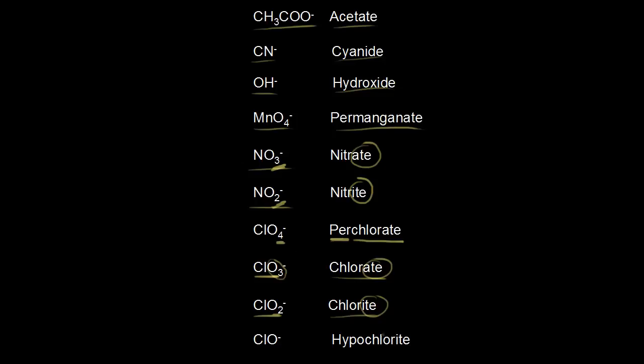Next, let's look at hypochlorite. So we talked about chlorite up here. So here's chlorite. And then we put a prefix hypo in front of it. Hypo means one fewer. So if we look at chlorite, we had two oxygens. We take one away and now we have only one oxygen. And so that must be the hypochlorite ion.